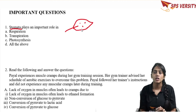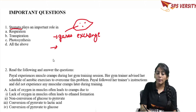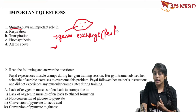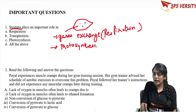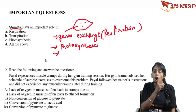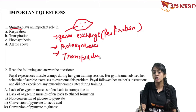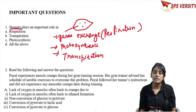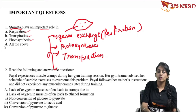Stomata are guarded by guard cells which regulate their opening and closing. The functions we are studying include: gaseous exchange — which requires oxygen and is related to respiration — photosynthesis, which involves carbon dioxide, and transpiration. These three important processes are performed by stomata. So the answer to what important role stomata plays includes respiration, transpiration, and photosynthesis.